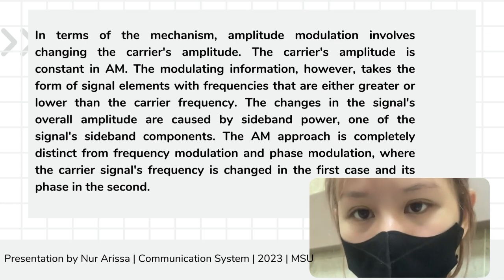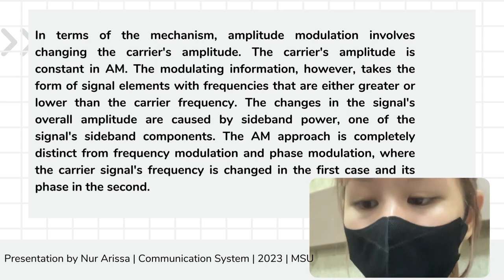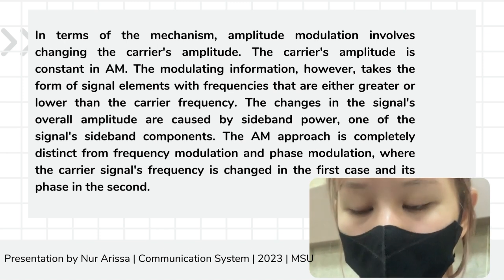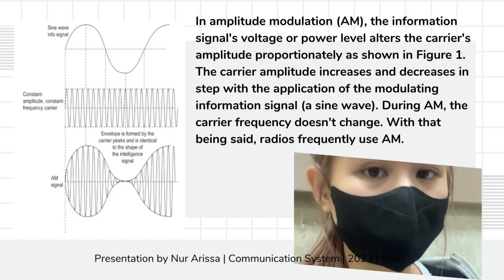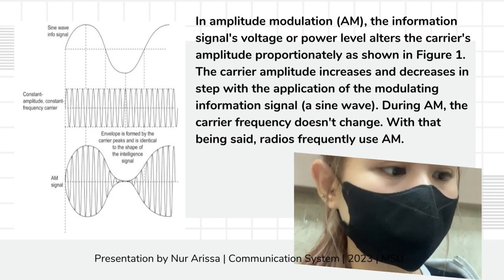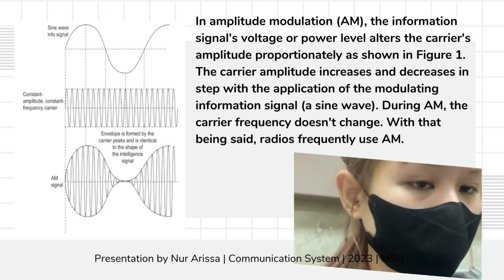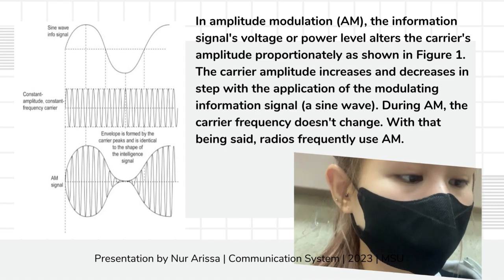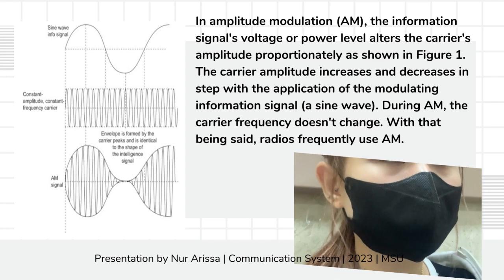Changes in the signal's overall amplitude are caused by sideband power, one of the signal's sideband components. The AM approach is completely distinct from frequency modulation and phase modulation, where the carrier signal's frequency is changed in the first case and its phase in the second. In AM, the information signal's voltage or power level alters the carrier's amplitude proportionately, as shown in Figure 1. The carrier amplitude increases and decreases with the application of the modulating information signal, which is a sine wave.